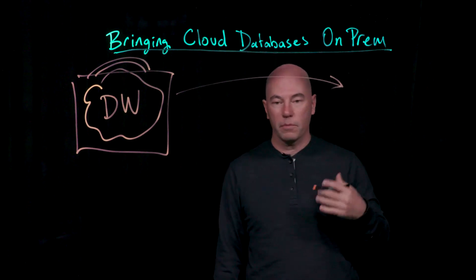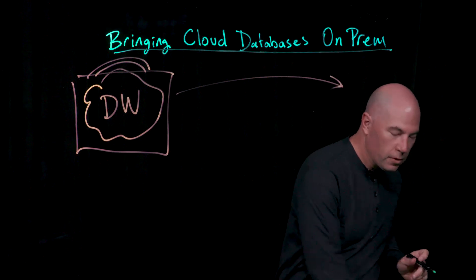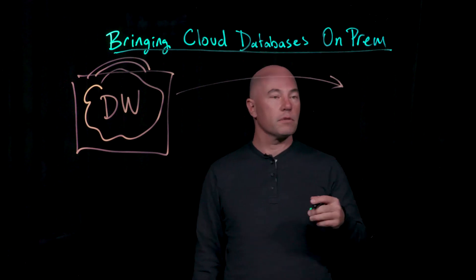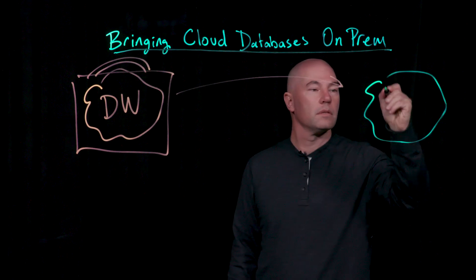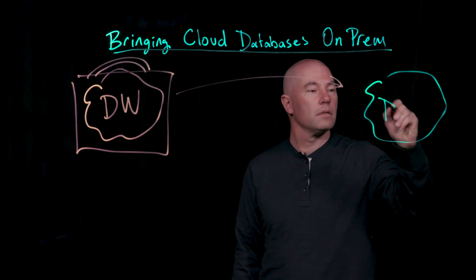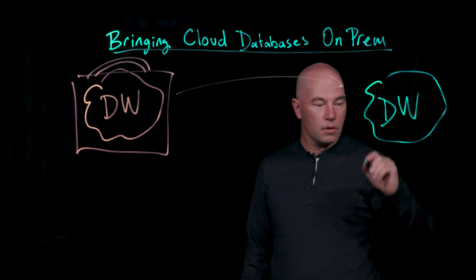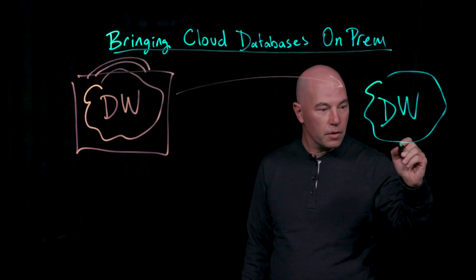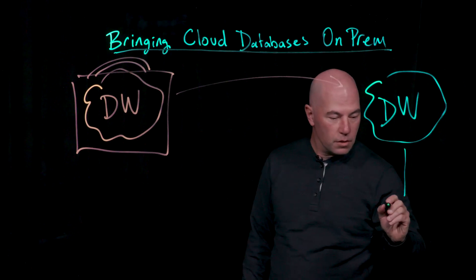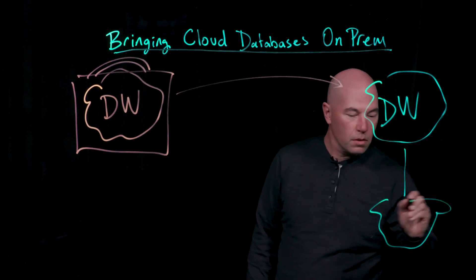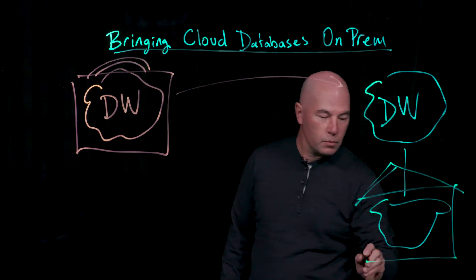With Greenplum for Kubernetes, you're running Greenplum on Pivotal's container service or other Kubernetes providers. We remove that vendor lock-in so that you can run your data warehouse, Greenplum, on public clouds or you can run it on-prem.